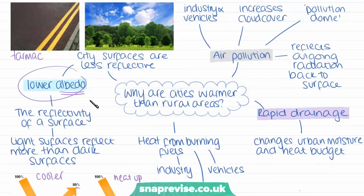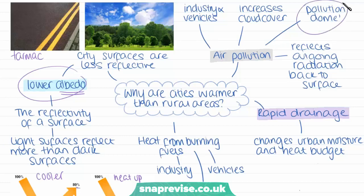Another factor that can influence why cities are warmer than rural areas is because of air pollution, which typically comes from industry and vehicles. Because we have more industry and cars in cities, they create more pollution, and this can create a pollution dome. What this pollution does is that it allows in shortwave radiation into the dome, but then it absorbs a lot of it and reflects it back to the surface, essentially making the city warmer. It acts as a blanket — the city area is already really hot because of the albedo effect, and air pollution essentially acts as a blanket and keeps it even warmer and insulates it.